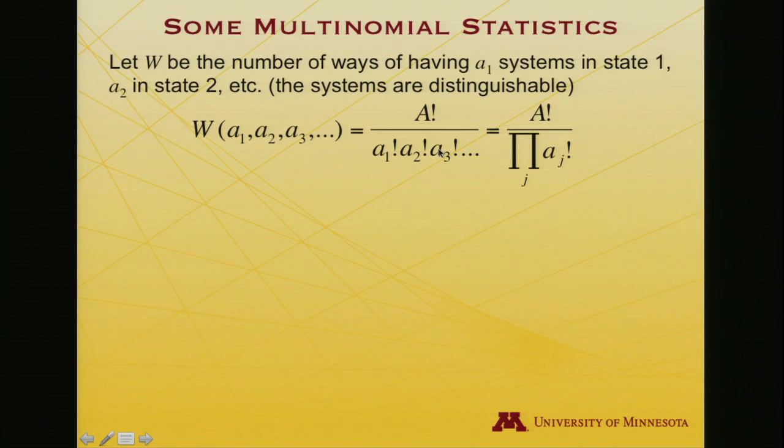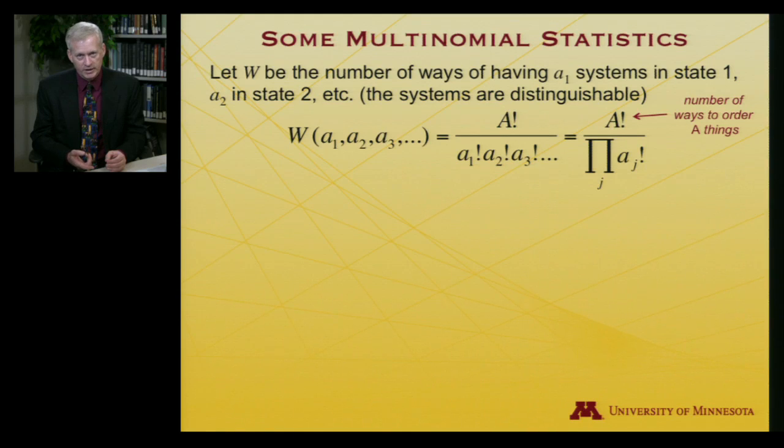So in that case, the number of ways I can do that, well, first off, how many ways can I order things? If I am given a collection of things and the total number of things is capital A, how many ways can I put them in order? I have capital A choices for the first thing, capital A minus 1 choices for the second thing. So that's A times A minus 1 for the first two. And then capital A minus 2 for the third thing. And so on. So the number of ways I can order them is A factorial.